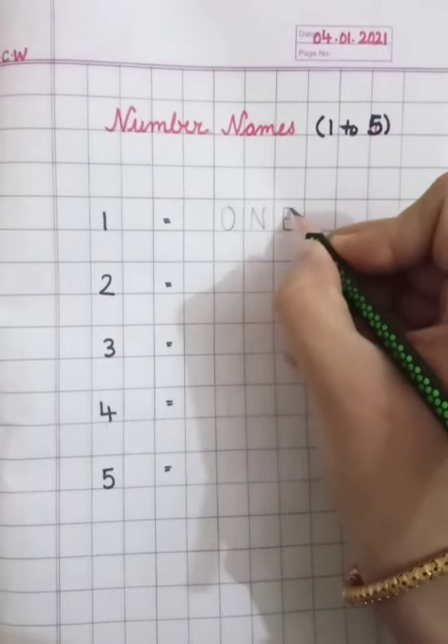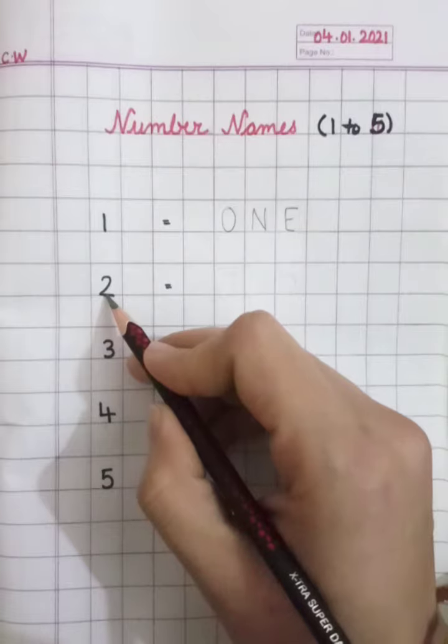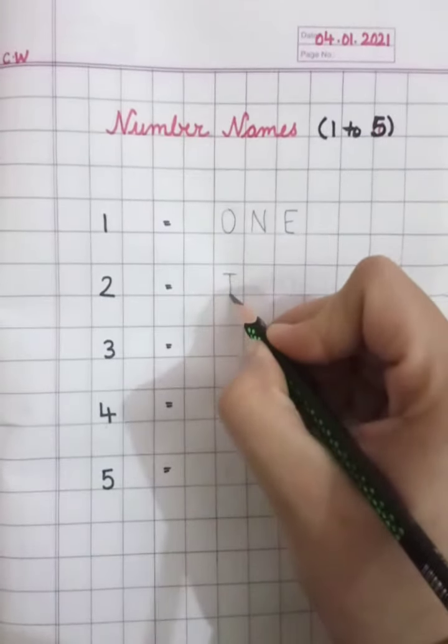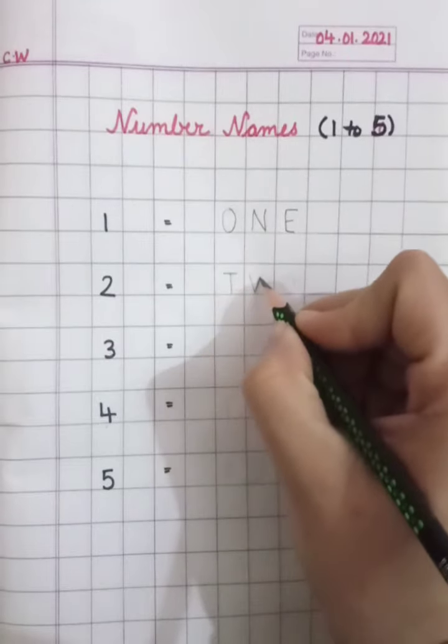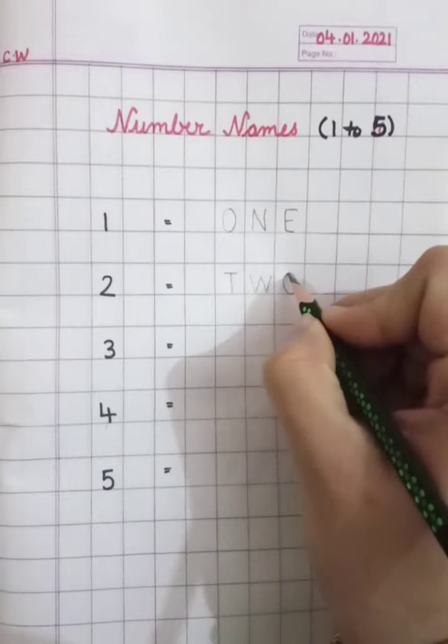And the next number is two. What is the spelling of two? T, W, O, two.